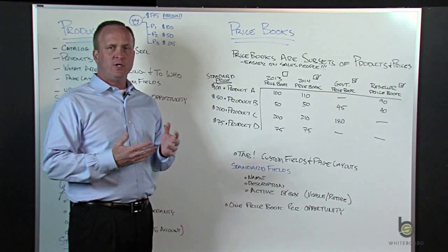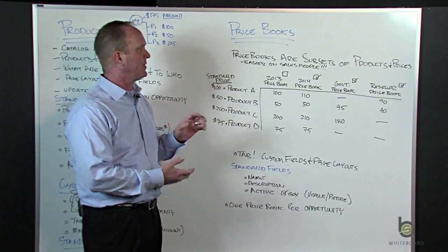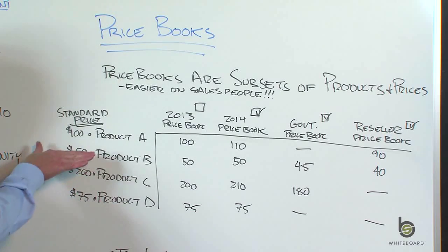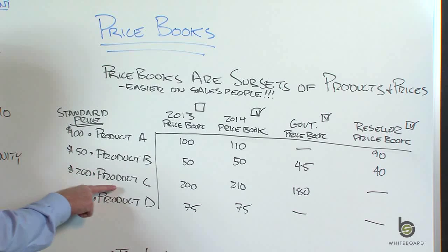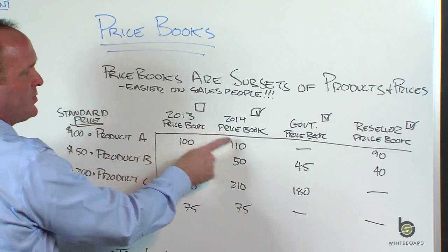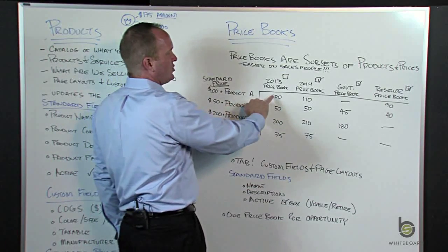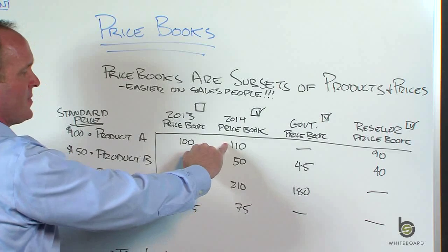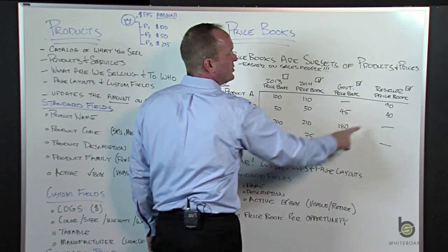Price books are a way to take your full product catalog — maybe you have a hundred or a couple thousand products — and break that catalog into subsets with distinct pricing. The reason is to make it easier for your salespeople. Here on this chart, I've got product A with a standard default list price of $100, product B for $50, product C for $200, and product D for $75. We have four price books: a 2013 price book, a 2014 price book, a government price book, and a reseller price book. Product A has a standard price of $100, in the 2013 price book it's $100, in the 2014 price book the price is $110. That product is not available in the government price book, and when we sell it to resellers it's $90.